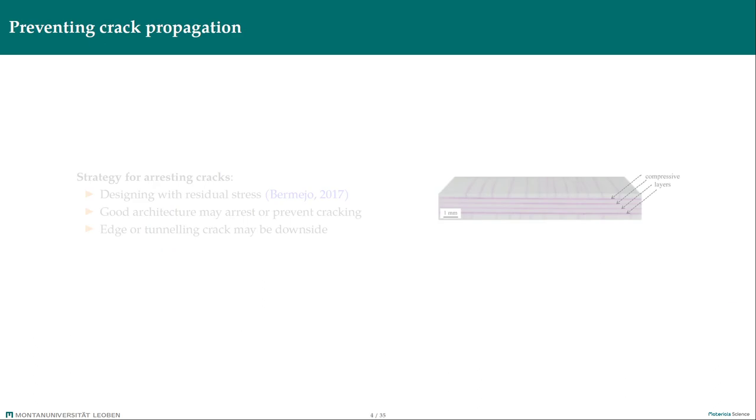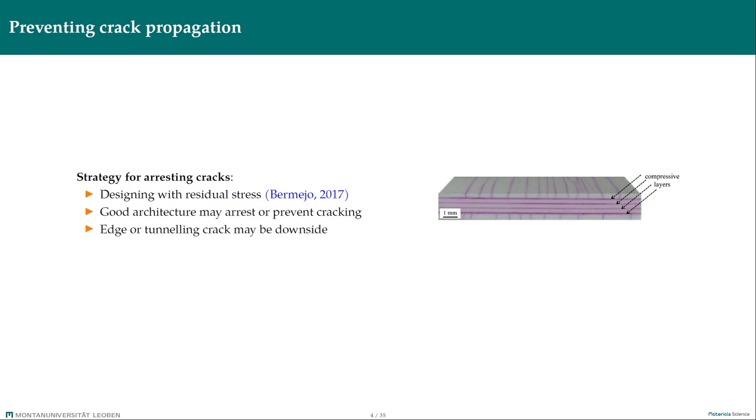To prevent a catastrophic failure we need to prevent crack propagation or even initiation. One such strategy which helps stopping of propagating cracks is designing of a specimen out of two materials which have mismatching coefficients of thermal expansion. After cooling down from sintering, layers having different coefficients of thermal expansion will contain compressive or tensile in-plane residual stresses. Such layered architectures may arrest or even prevent cracking but it comes with a downside of so-called edge or tunneling cracks.